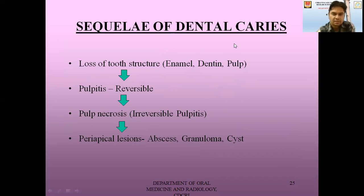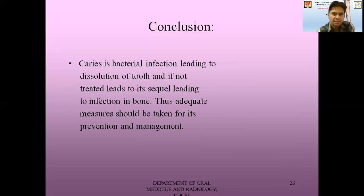Coming to the sequelae of dental caries — if caries is not diagnosed at its early phase and has progressed, it can lead to pulpitis, then to periapical lesions such as abscess, granuloma, or cyst. To conclude, caries is a bacterial infection leading to dissolution of the tooth, and if not treated, it leads to its sequelae with infection in the bone. Thus adequate measures should be taken for its prevention and management.